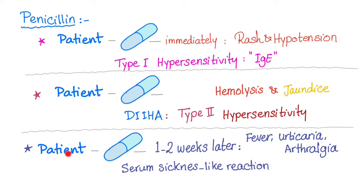Third and last scenario: patient takes penicillin and one to two weeks later develops fever, urticaria or rash, and arthralgia or joint pain. What's the diagnosis? This is serum sickness-like reaction.